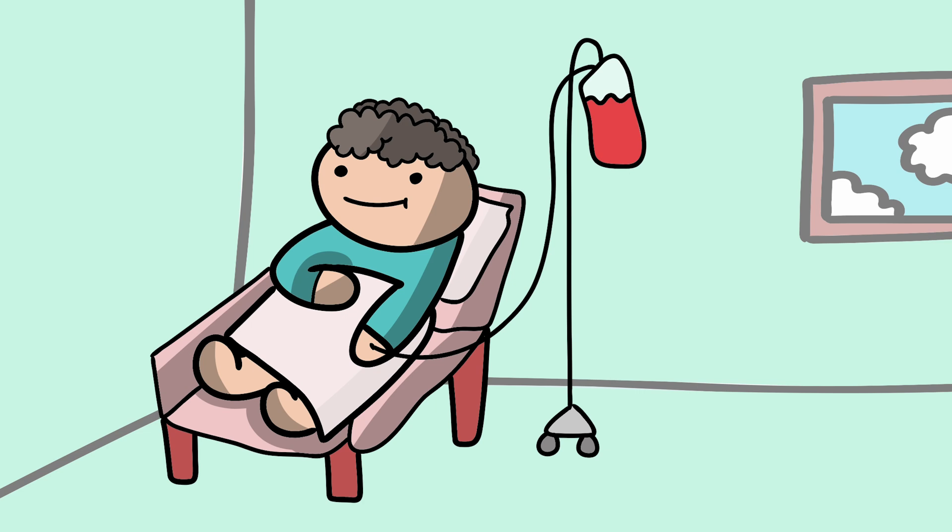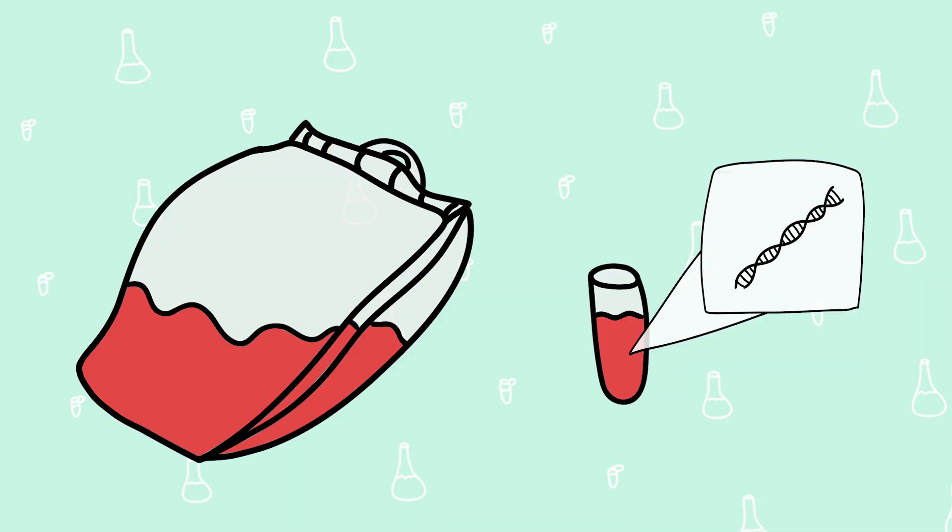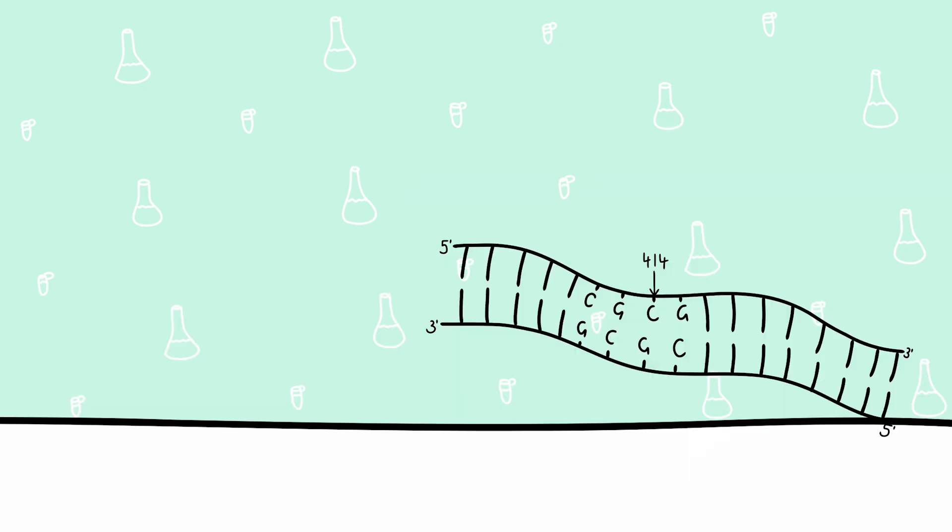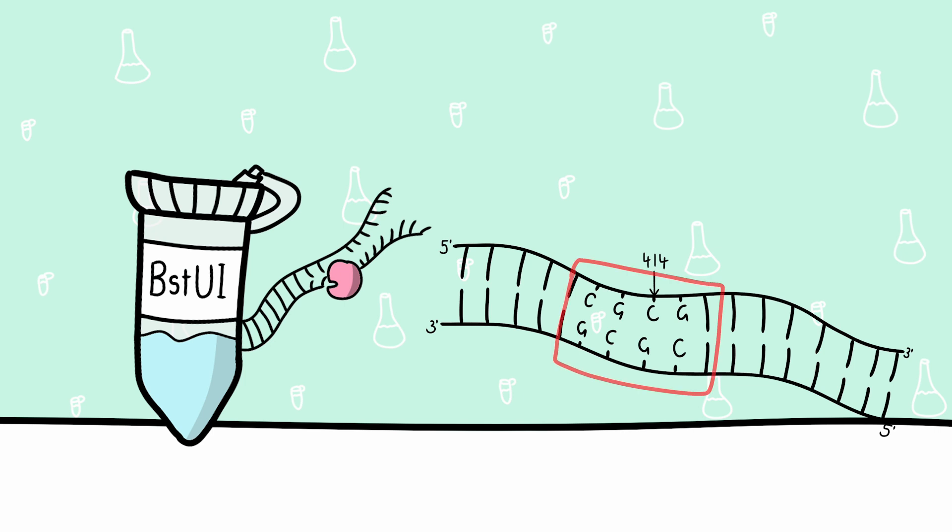The experiment was run as follows. DNA was extracted from plasma samples of all subjects, allowing for the extraction of the gene of focus, which was then amplified using polymerase chain reaction. Then the genetic sequences were run through a restriction enzyme digestion experiment, where BstUI was added to digest at the palindromic cleavage site.